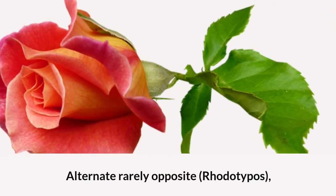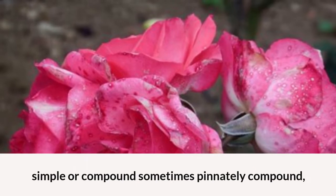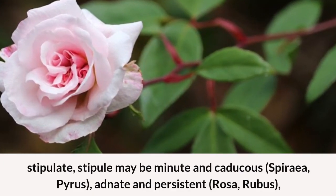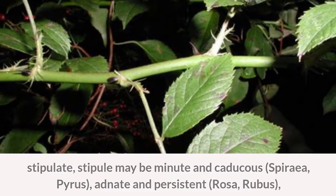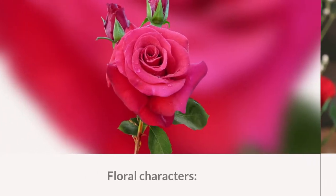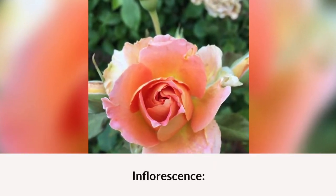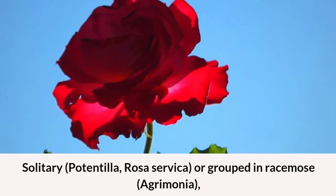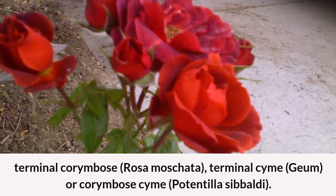Leaves: alternate, rarely opposite (Rhodotypos); simple or compound, sometimes pinnately compound; stipulate — stipules may be minute and caducous (Spiraea, Pyrus), adnate and persistent (Rosa, Rubus). Leaf base conspicuous. Floral characters: inflorescence solitary (Potentilla, Rosa), or grouped in racemes (Agrimonia), terminal corymbs.